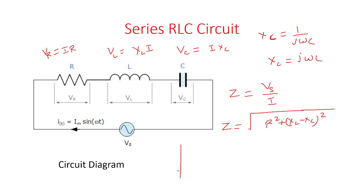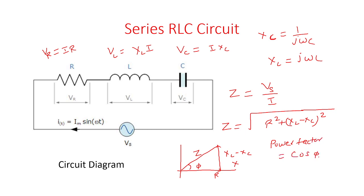If we plot this in triangular form, the X-axis is the real axis that is R, the height is XL minus Xc, and the hypotenuse is the impedance Z, by using the Pythagoras theorem. The angle between the resistance and impedance is phi. Power factor calculation depends on the phase angle — power factor is cos phi, which can be written as R divided by Z, base divided by hypotenuse. Based on these relations, we will see a problem on series RLC circuit.